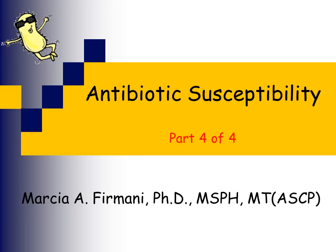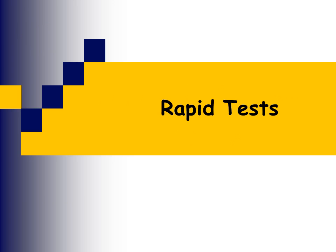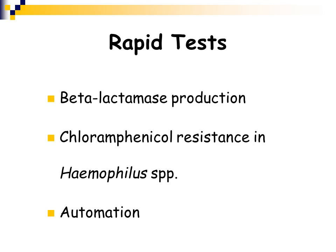This is the last part of our antibiotic susceptibility lecture and we're going to discuss some of the rapid tests that are done in the clinical laboratory. Some of these rapid tests are looking for beta-lactamase production, to look for chloramphenicol resistance in Haemophilus species, as well as our automated instrumentation that does all the susceptibility testing in addition to the biochemical tests for identification.